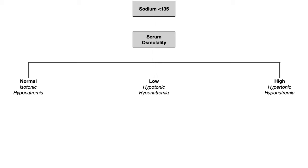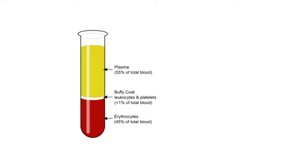Let's start with isotonic hyponatremia. The three different causes are hyperlipidemia, multiple myeloma, and TURP syndrome. In the case of hyperlipidemia and multiple myeloma, it's actually a really interesting phenomenon, so let's talk through it.